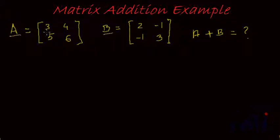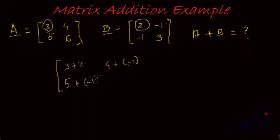As per the previous video, what we do is we identify these corresponding elements and add them up together. So A plus B would be equal to A11 plus B11, which is 3 plus 2, 4 plus minus 1, 5 plus minus 1, and 6 plus 3.